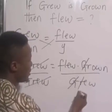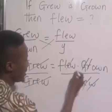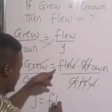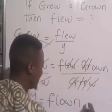Here, g will cancel g, r will cancel r, e will cancel e, w will cancel w. So y is f, l, o, w, and n.